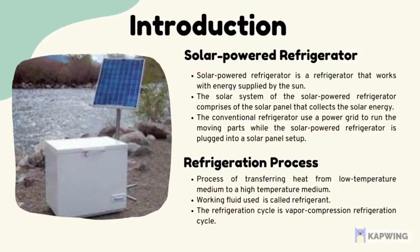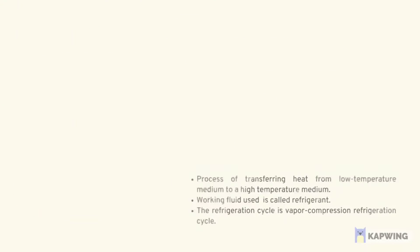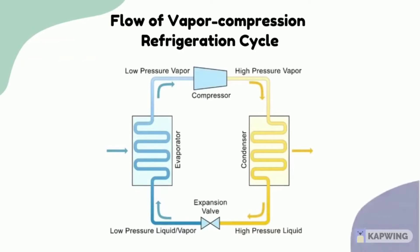Refrigeration is the process of transferring heat from a low temperature medium to a high temperature medium. The working fluid used in the process is called refrigerant. The refrigeration cycle used in the refrigeration process is the vapor compression refrigeration cycle, and the diagram shows the flow of this cycle.